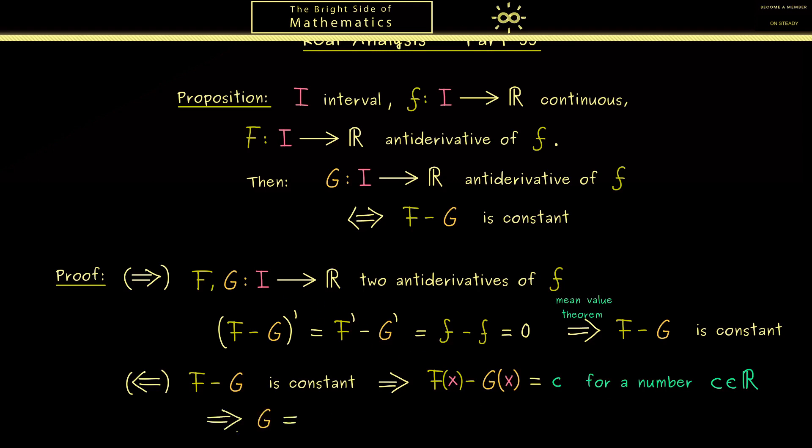Then in the next step we can simply write that the function G is equal to the function F minus c. Now you see by assumption F is differentiable because it's an antiderivative. Therefore the function F minus c is differentiable and therefore also G. And then we conclude we can form the derivative on both sides. However, then of course the constant will vanish on the right hand side.